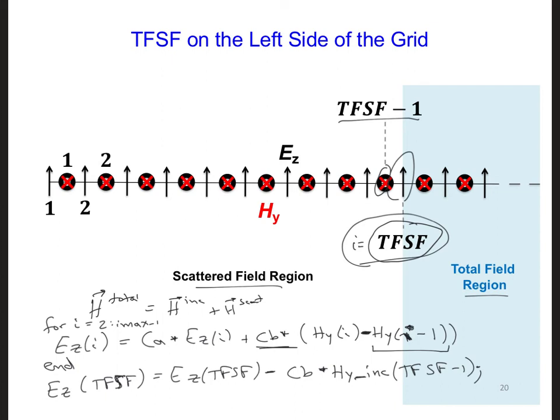So in summary, to implement a plane wave, we can perform regular updates on all the field components. But after we update each component, we need to add a correction to correct the inconsistencies in the fields that are stored in our arrays, total versus scattered fields. And that correction for the left interface is written right here.